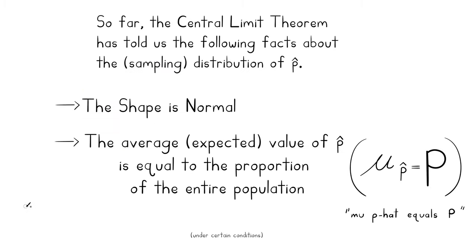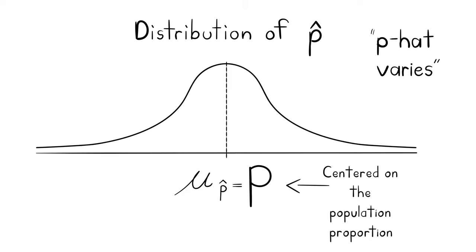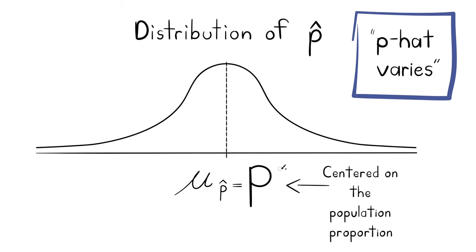So far the central limit theorem has told us the following facts about the sampling distribution of P-hat: the shape is normal, and the middle of that distribution — the expected value — equals the proportion of the entire population. The population proportion is right in the middle of the sampling distribution of P-hat. P-hat is a variable. Let's do an example problem.